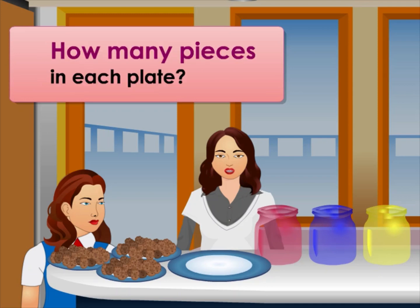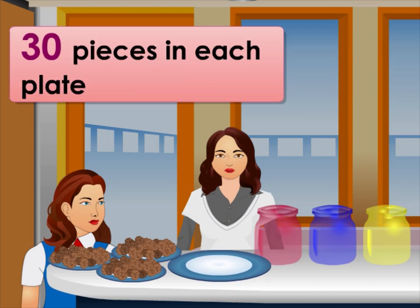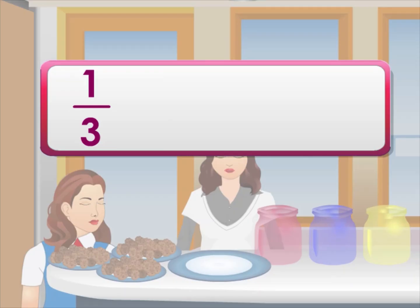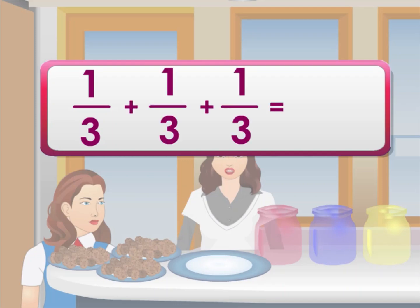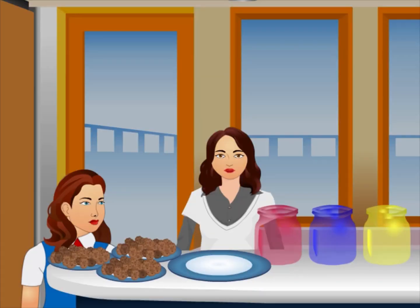How many are there in each plate? 30, Mom. Any left? No more left. When we add one over three, or one third, repeatedly three times, it becomes three over three. This means all three parts make one whole.